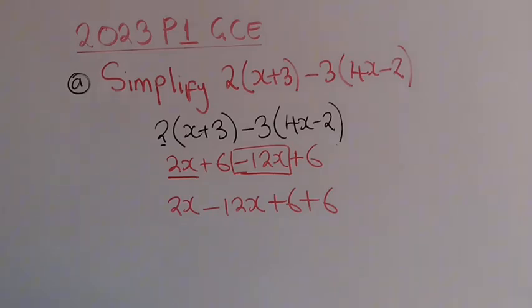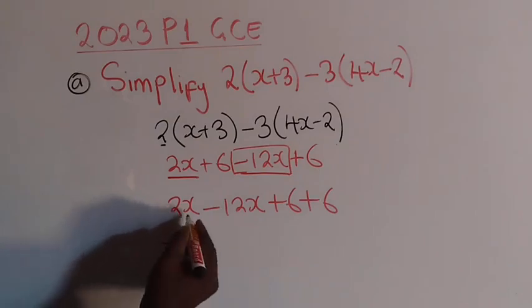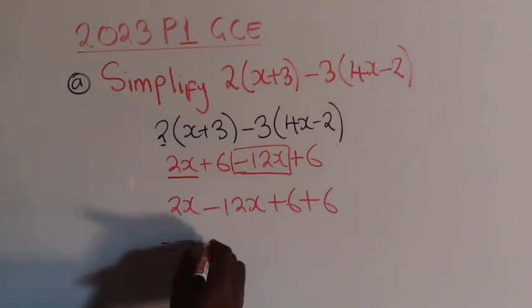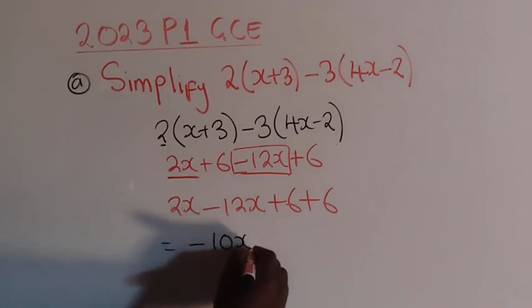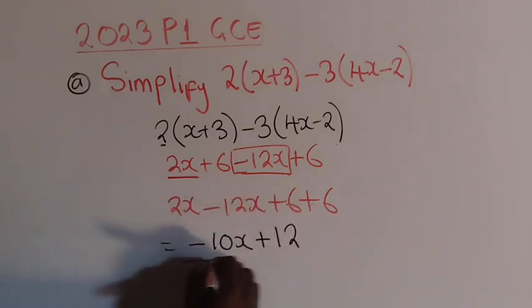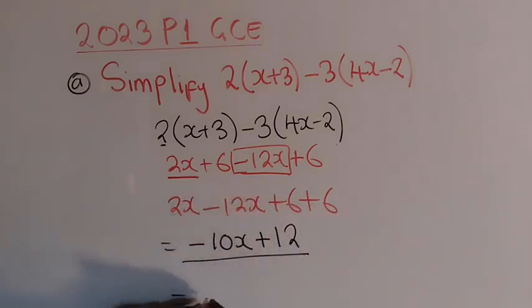Now from there, we can just simplify where we write 2x minus 12x, a smaller number subtracting a bigger number, this will give us negative 10x, then plus 6 plus 6, this will give us a 12. So this is your answer, or you can write it like this, 12 minus 10x. So we have simplified.